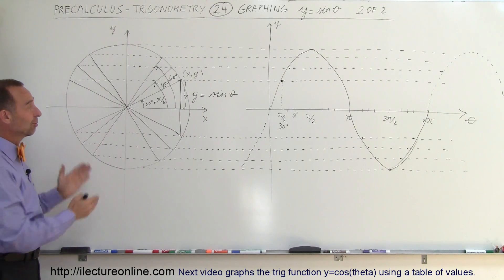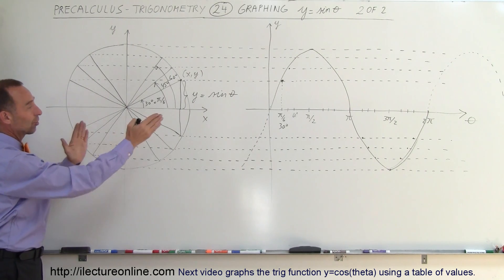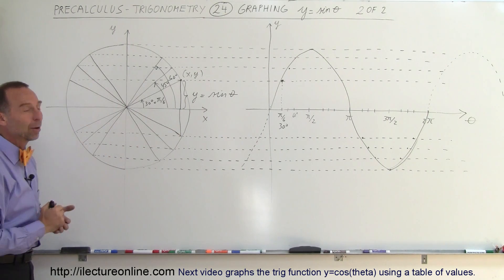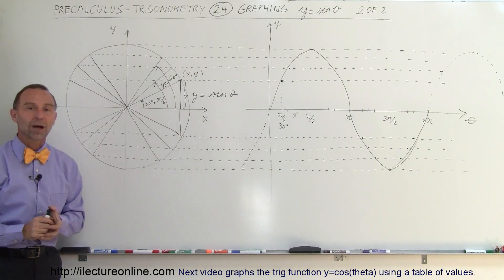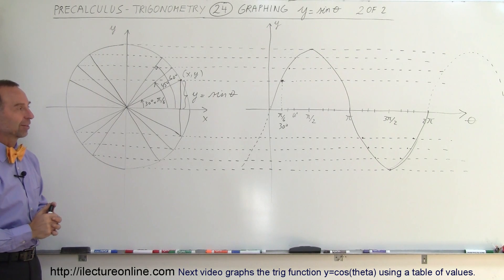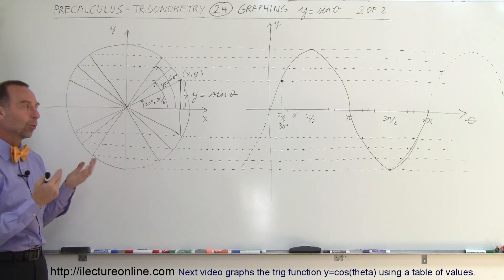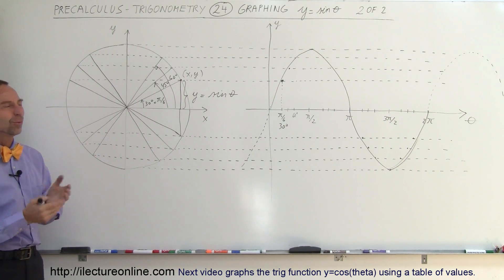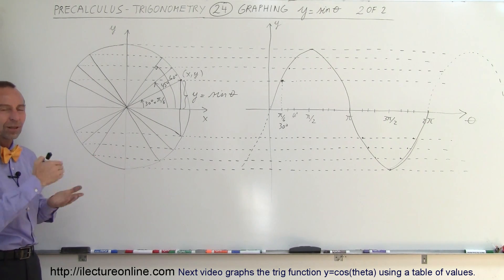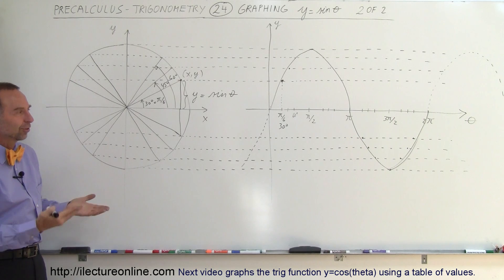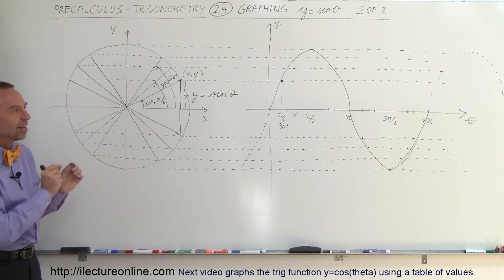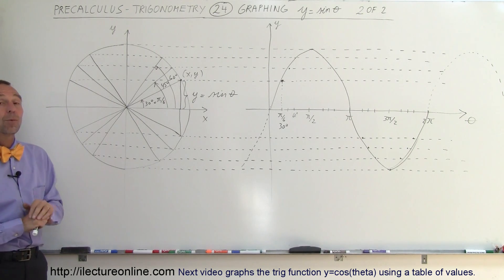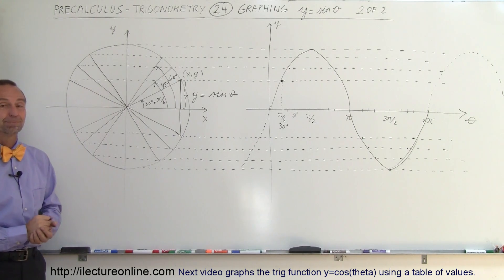And there's the relationship between the unit circle and how we graph y equals the sine of x, or y equals the sine of theta. Usually we use theta, sometimes we use x, sometimes we use t, depending upon what we want to call the independent variable.